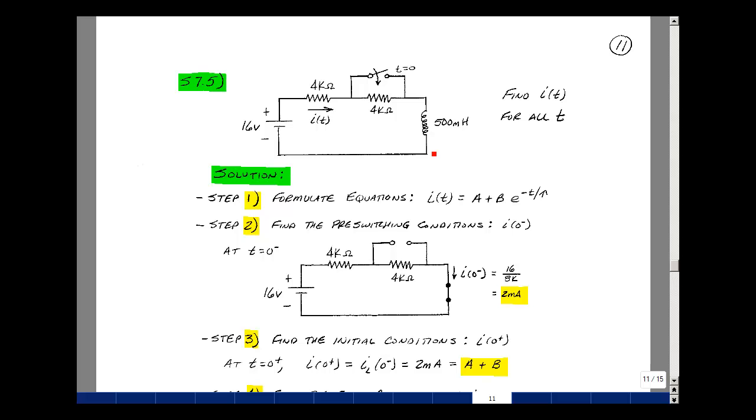Given this one inductor circuit with a single-pull, single-throw switch that's going to close at t equals zero, can you solve for the current I of t? We had a six-step algorithm in our Chapter 7 notes, so let's use that to solve this problem.